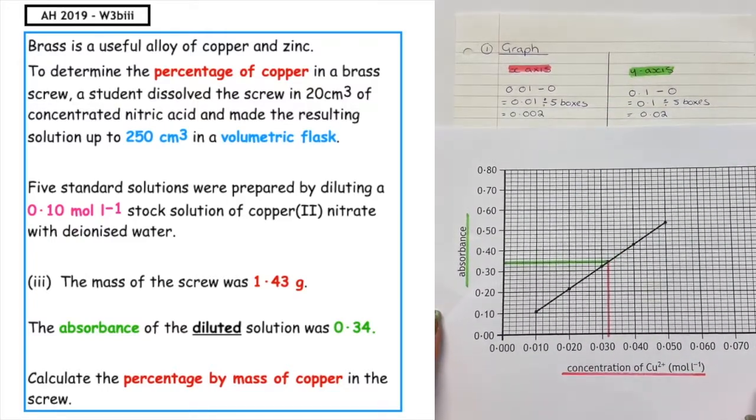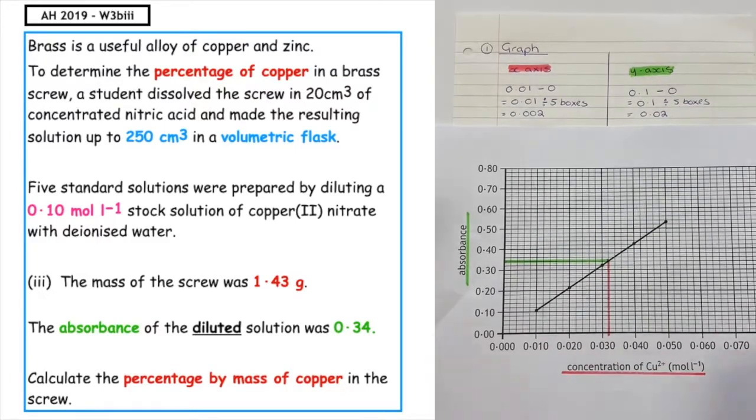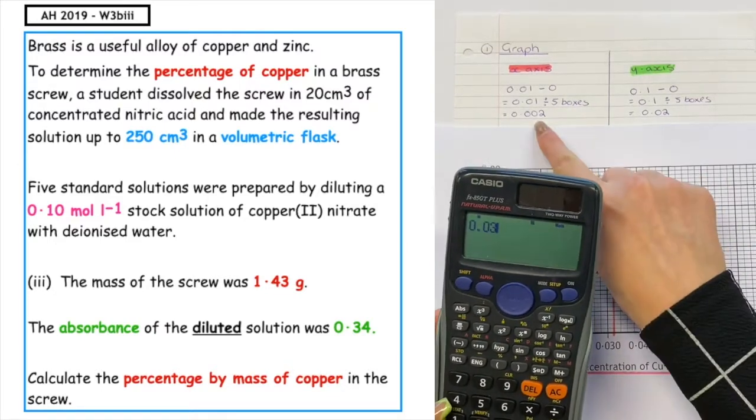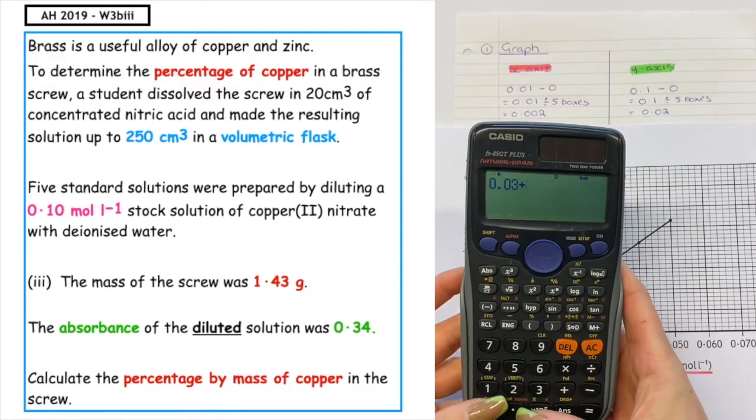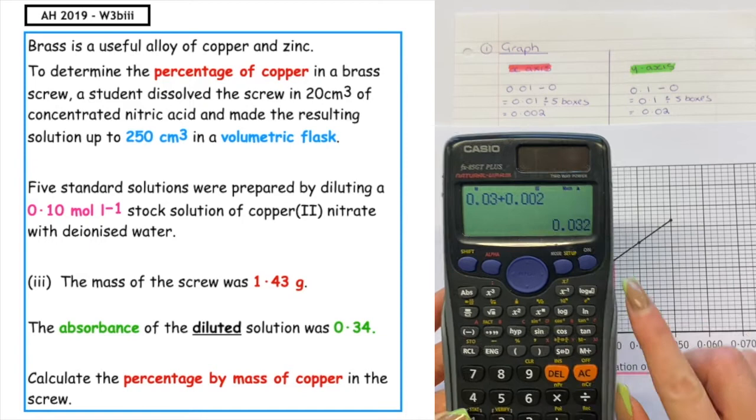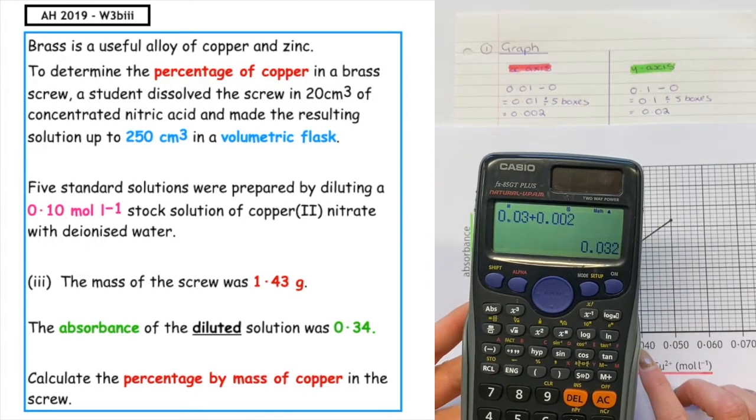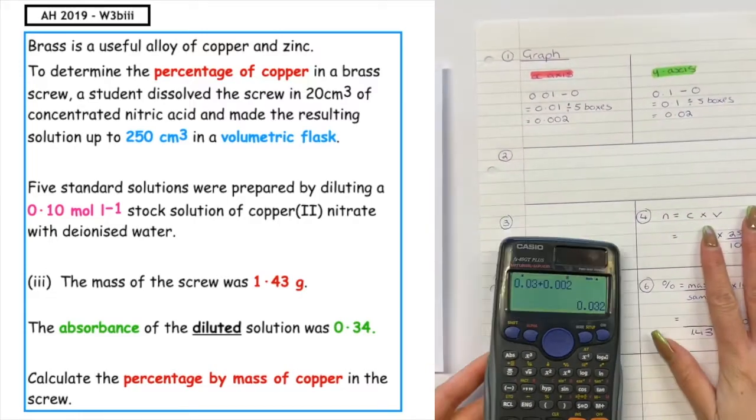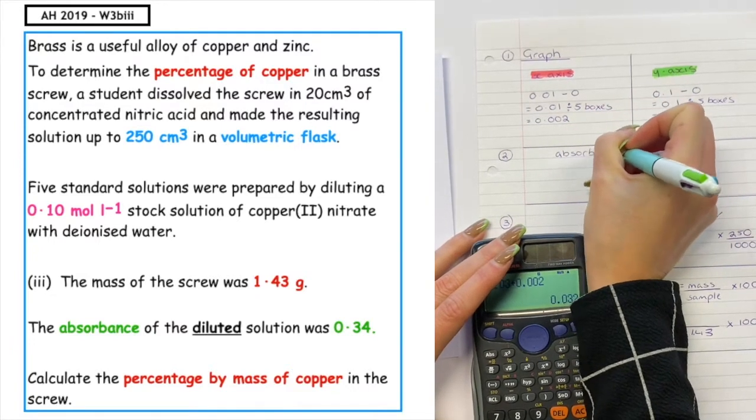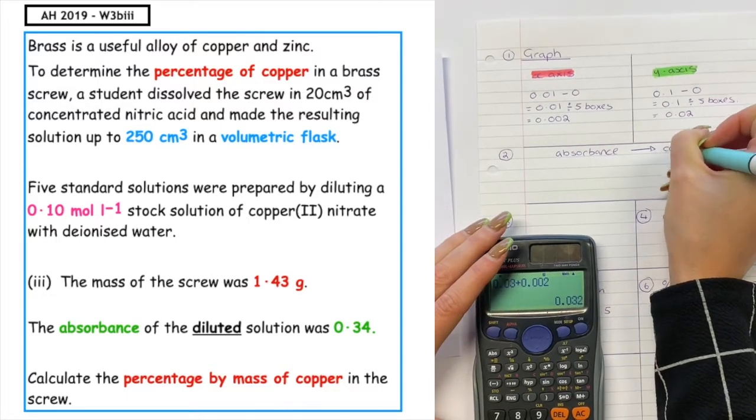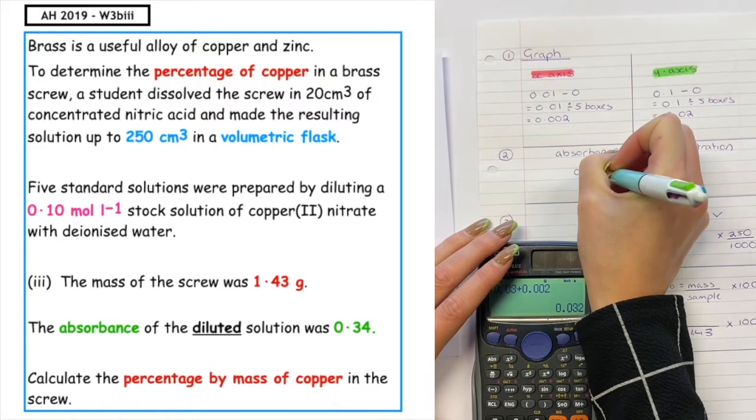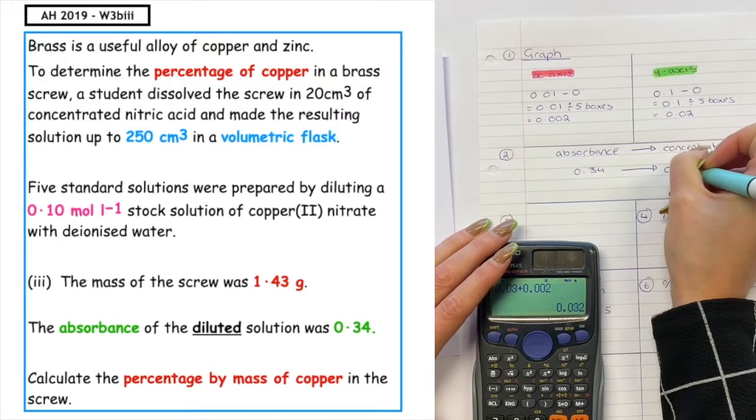What we can see is that is one box along from 0.03. So I have 0.03 plus, if I look at my x-axis, I've got one box along, so plus 0.002. That gives me the concentration given here as 0.032. So at this point, we've got a relationship between absorbance and concentration. We had the absorbance given in the question as 0.34 and the concentration we worked out was 0.032.